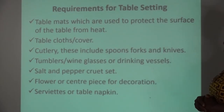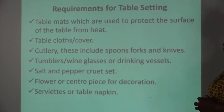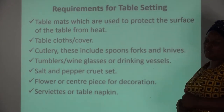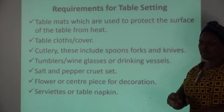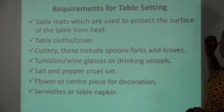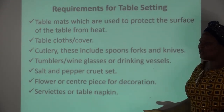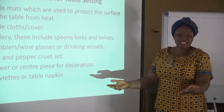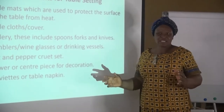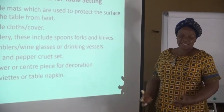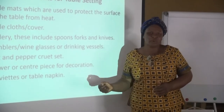Now let's go to the requirements for table setting. First, we have the table mats, which serve as protection from the heat of the food to protect the surface of the table. Then we have table cloth and cover. You can't just set a meal on a bare table. Table cloths are meant for beauty, for attractiveness, and for comfort. Another name for table cloth is table linen.